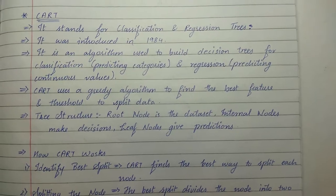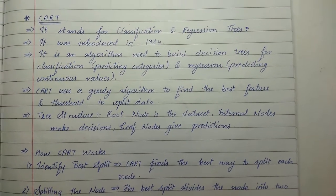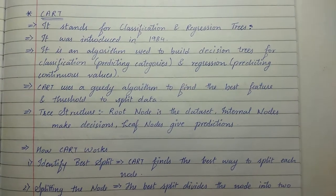Classification predicting categories and regression predicting continuous values. CART uses a greedy algorithm to find the best feature and threshold to split data.